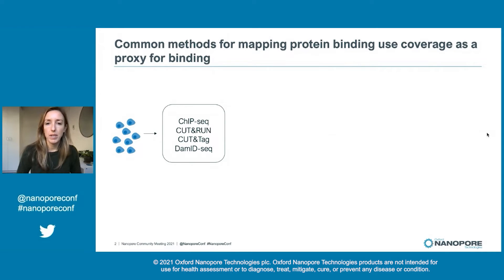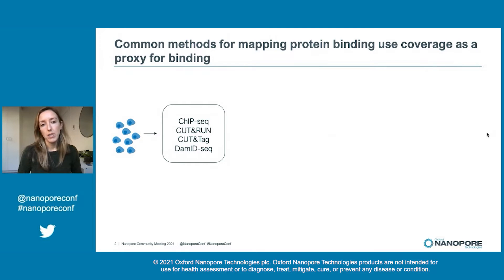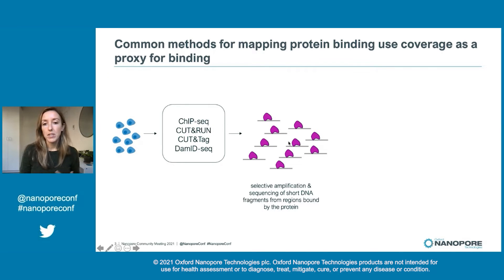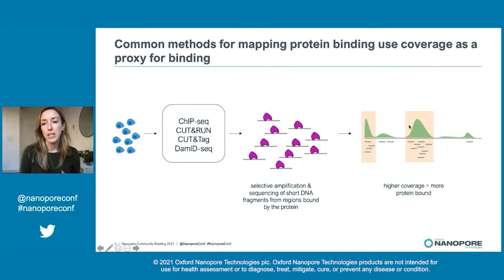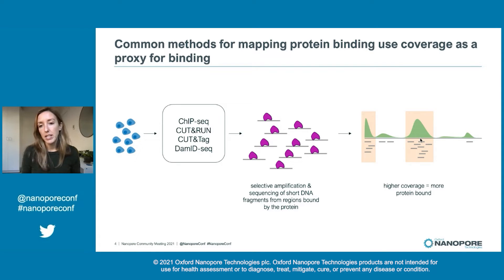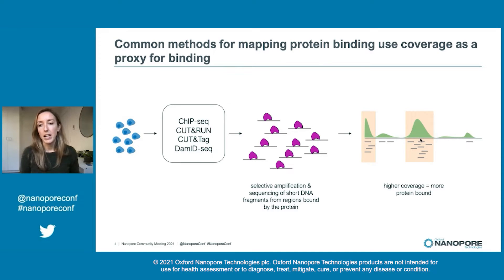Existing methods for mapping protein binding use coverage as a proxy for binding. They all rely on similar principles where you put cells into one of these commonly used methods, and then you selectively amplify and sequence short DNA fragments that are bound by your protein of interest. You align these short fragments back to the reference genome, and regions where you have higher coverage is where you assume your protein is bound. While these methods have been very powerful in profiling the binding patterns of over 11,000 proteins in humans, there are some key features of protein binding and regions of the genome where these methods cannot capture.